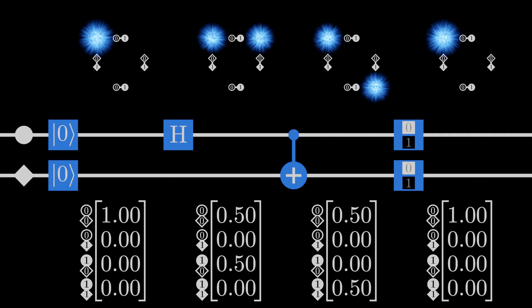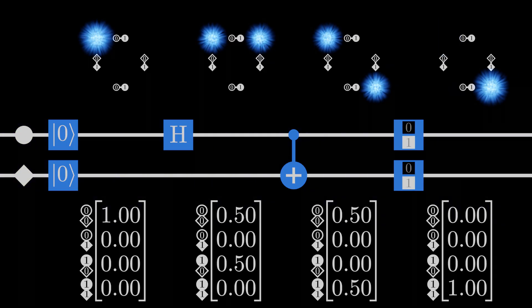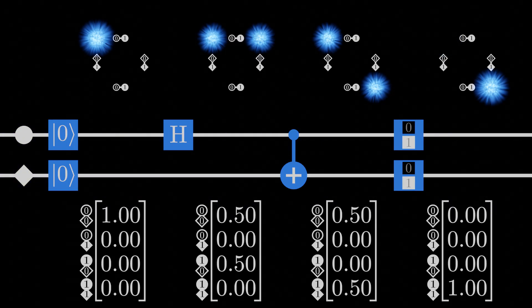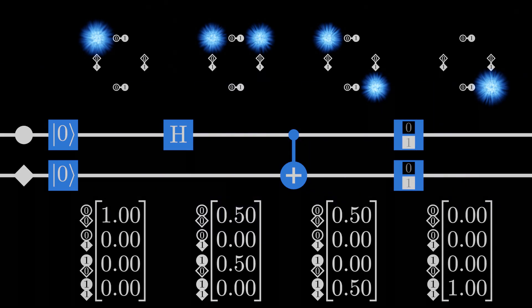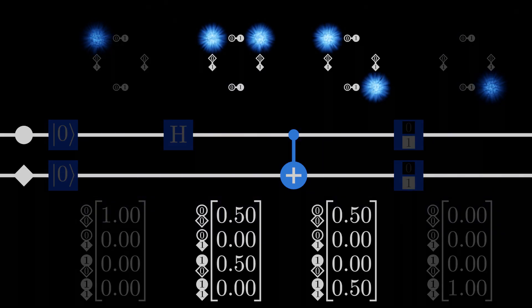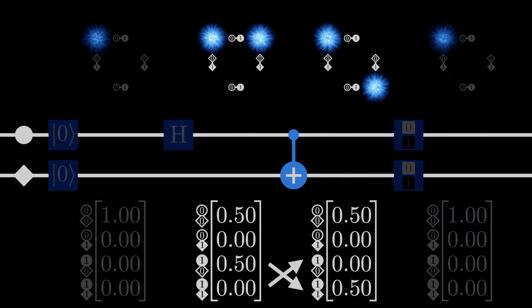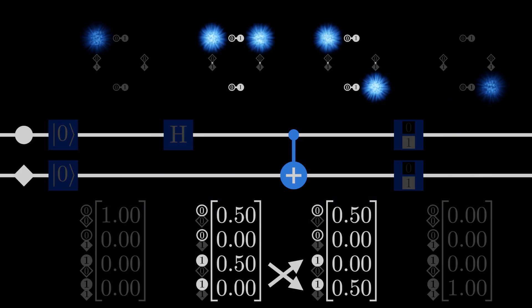To start, let's look more closely at this circuit that produces correlated measurements. The new kit on the block here is the control-not gate. This gate swaps the probabilities of one qubit's measurement, but only where another control qubit will be measured as one.